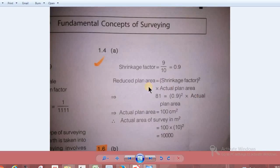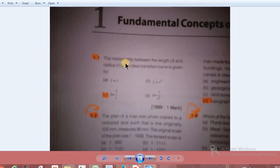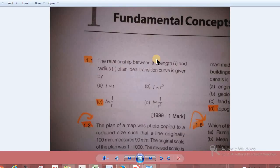The relationship between length and radius of an ideal transition curve is given. Length is proportional to radius.